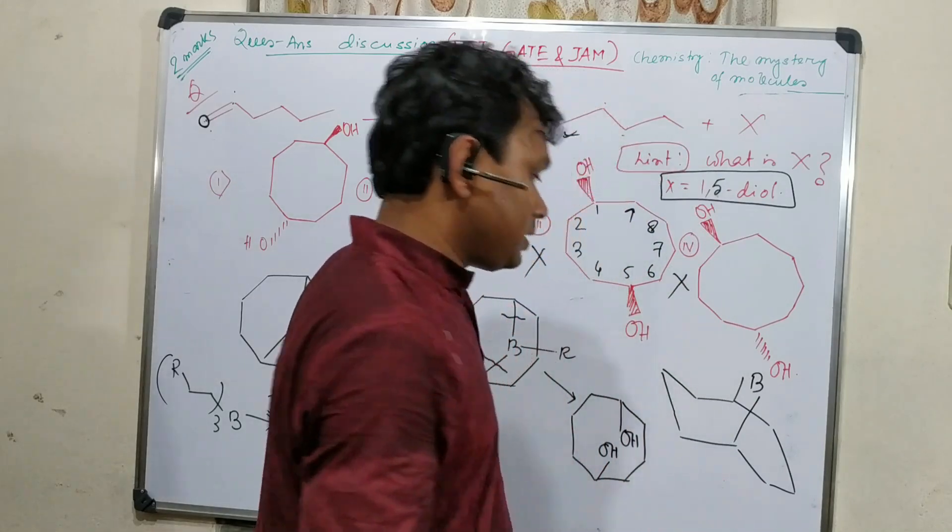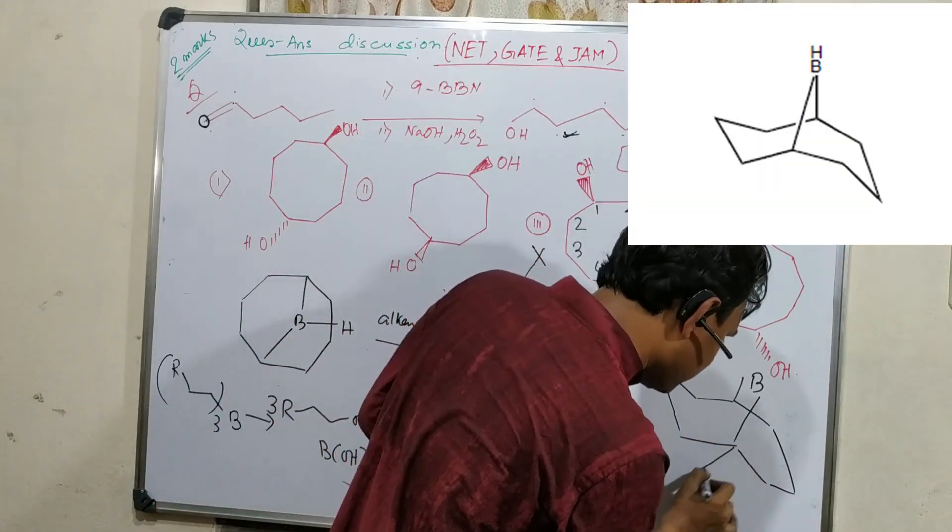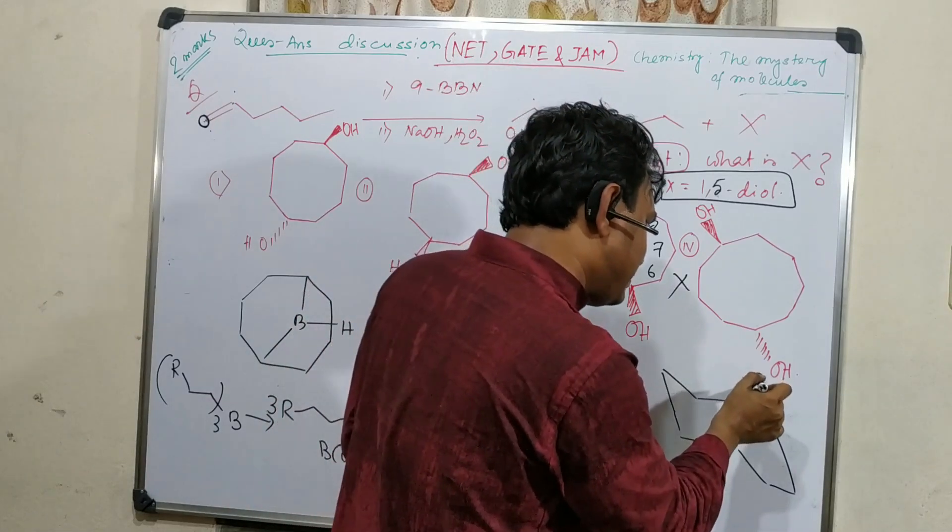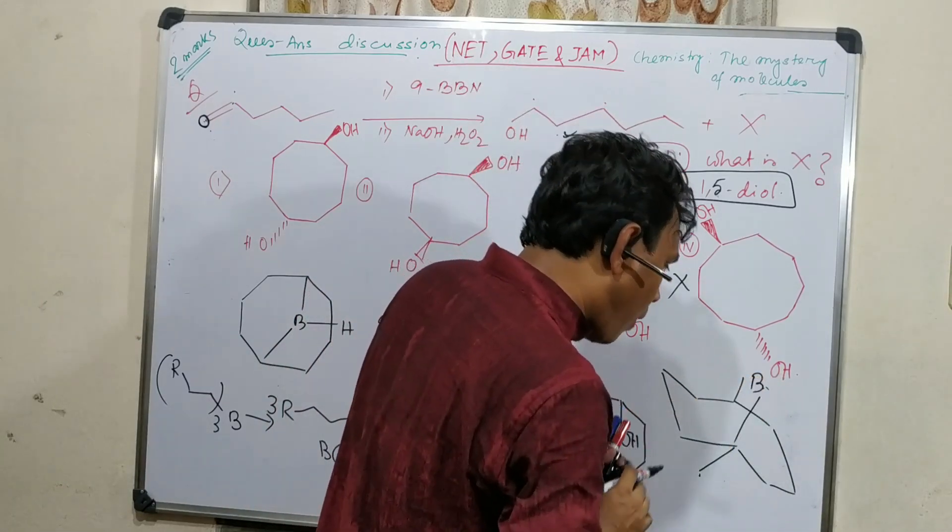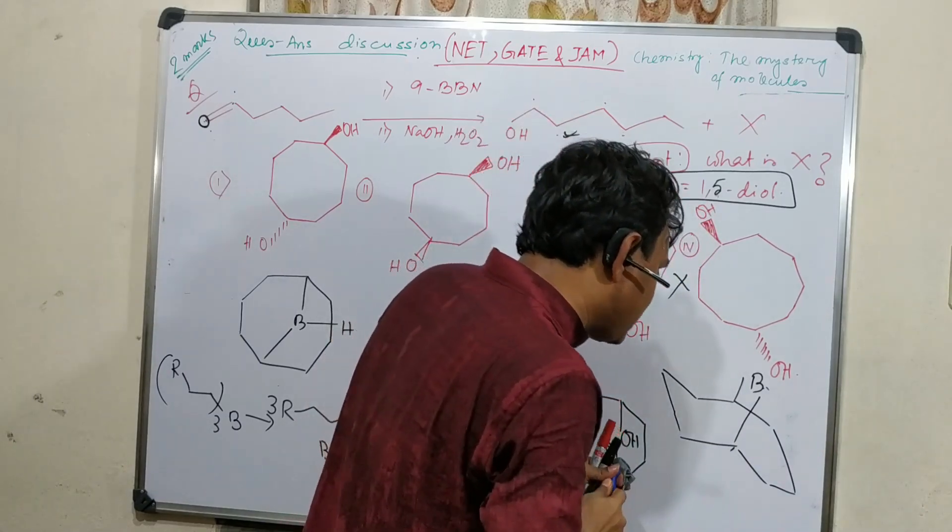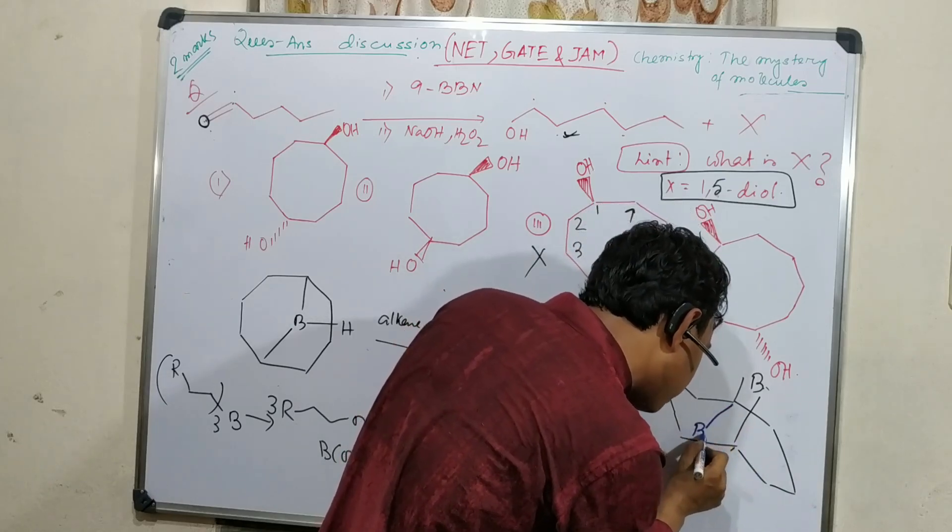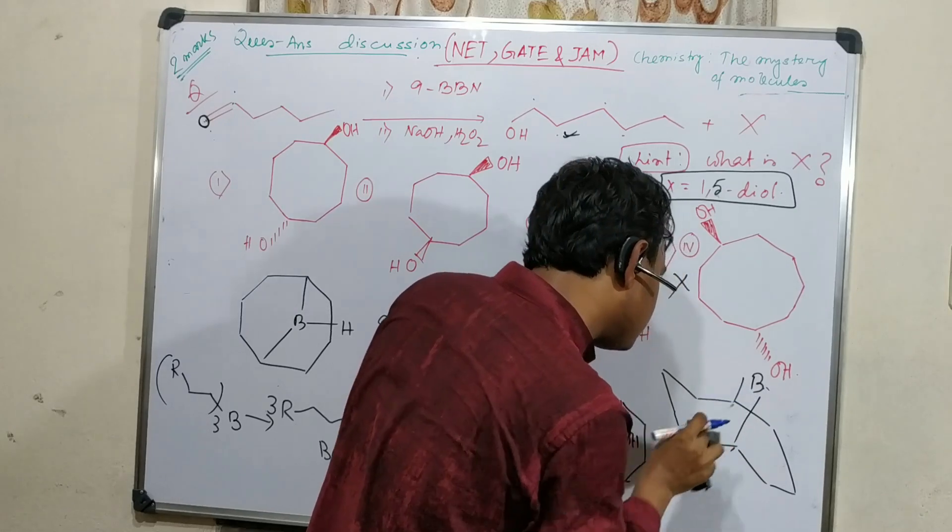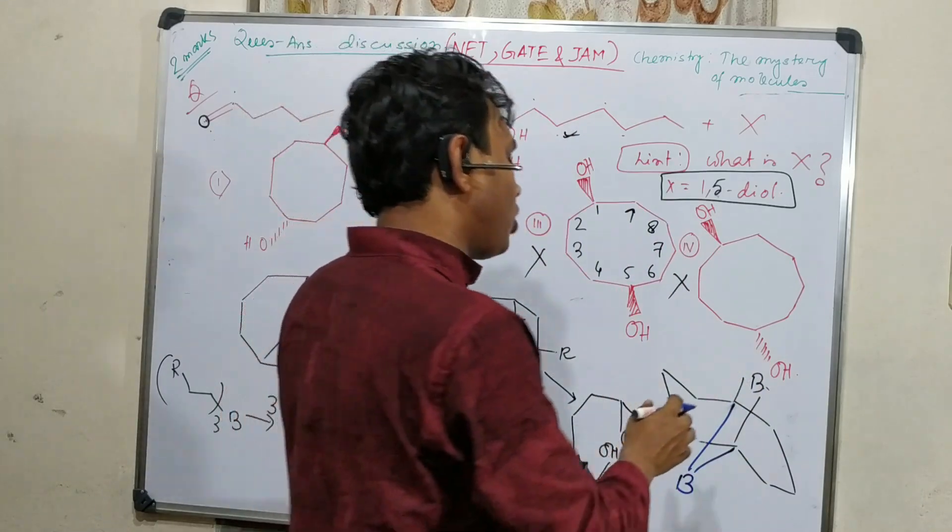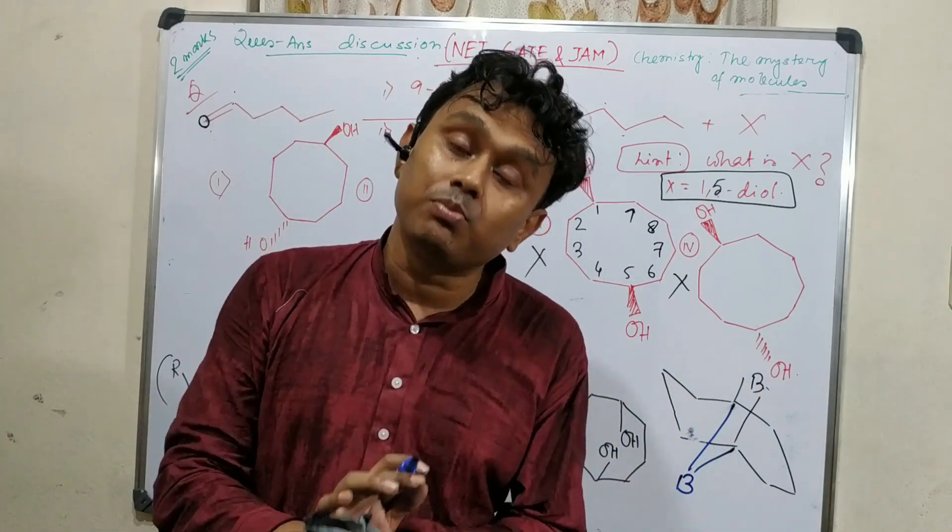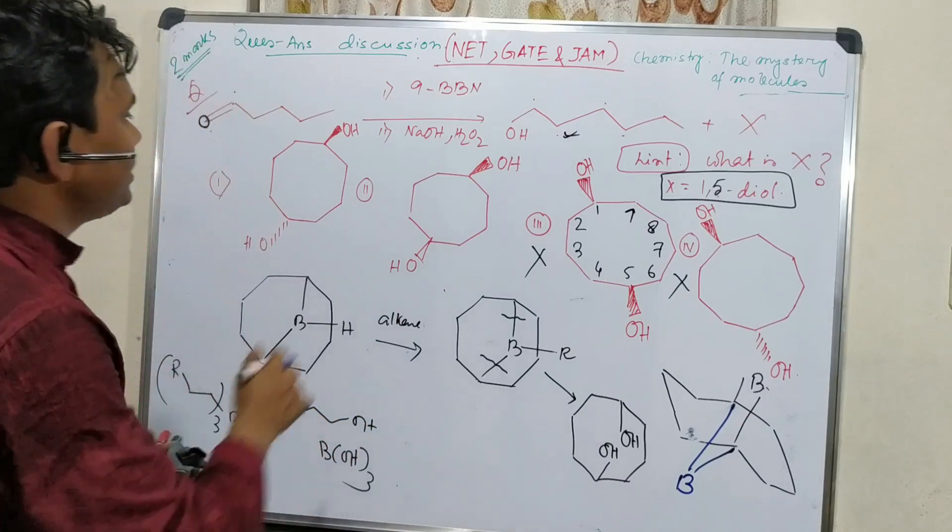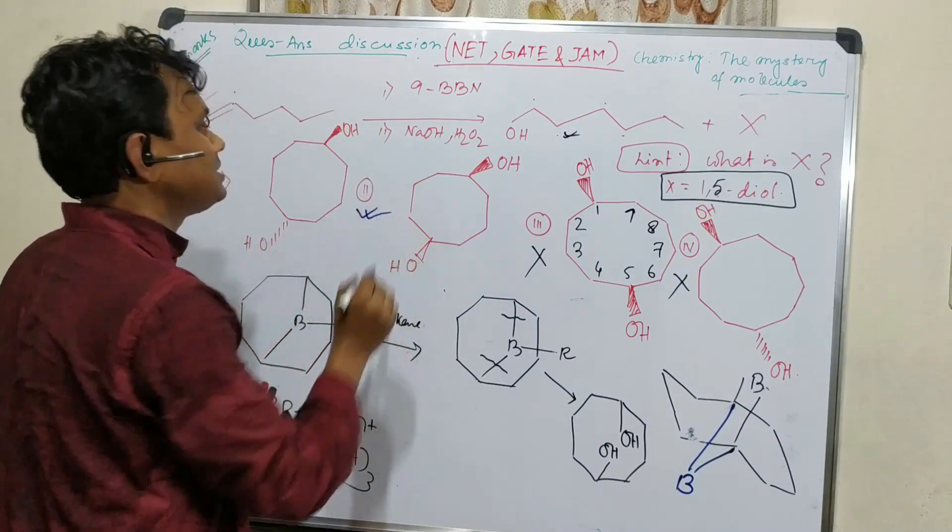Either from the top side the boron will be attached, or one other possibility is boron can be attached to the bottom side, meaning both borons are on the bottom. So either boron should be on top or boron should be on bottom. This means boron should be at the same side, so alcohol is on the same side. Now consider which alcohol is on the same side? This one. So this is the answer.